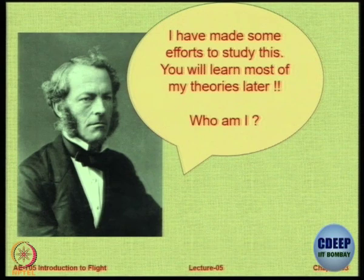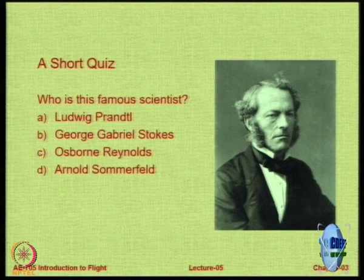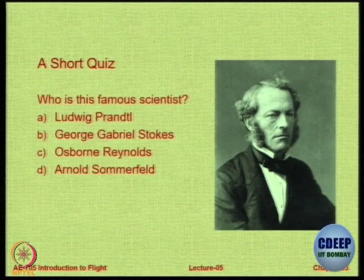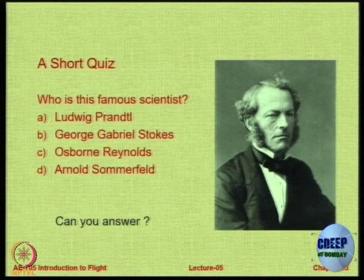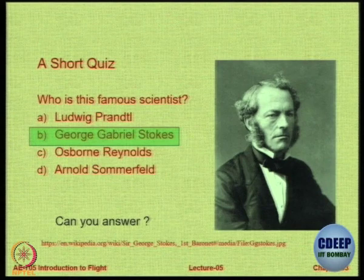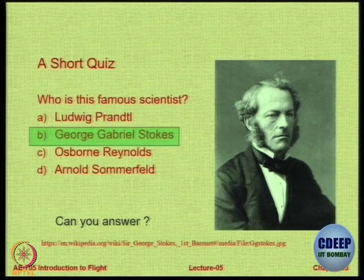The answer is George Gabriel Stokes. Remember the Navier-Stokes equations — he is the Stokes in that. Also remember Stokes' theorem, which we will study later. Stokes was the first person to study the laminar-to-turbulent transition, but he could not formulate it properly. It was Reynolds who came forward and built upon Stokes' work — just like Gatlin overtaking Bolt.